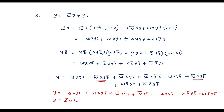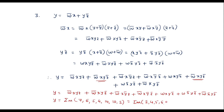Converting to minterm numbers: w bar xyz is 0111 = 7; w bar xyz bar is 0110 = 6; w bar xy bar z is 0101 = 5; w bar xy bar z bar is 0100 = 4; wxyz bar is 1110 = 14; wx bar yz bar is 1010 = 10; w bar x bar yz bar is 0010 = 2. In increasing order: y = Σm(2, 4, 5, 6, 7, 10, 14).